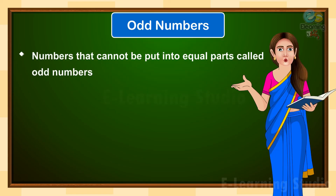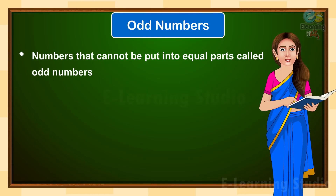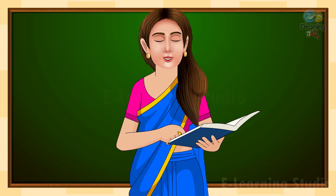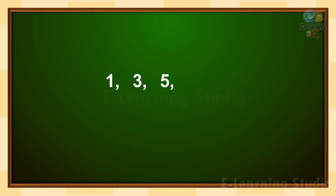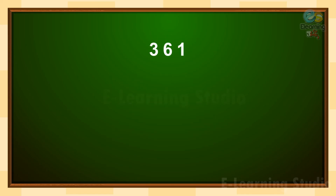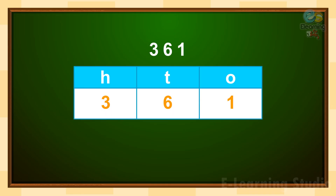Children, what is an odd number? Numbers that can't be put into equal parts are called odd numbers. Children, odd numbers have a 1, 3, 5, 7, or 9 in the ones place. In the number 361, what digit is in the ones place? Yes, it's 1.